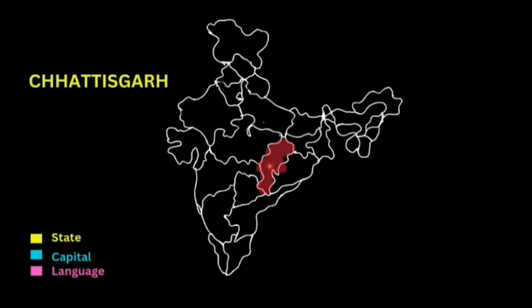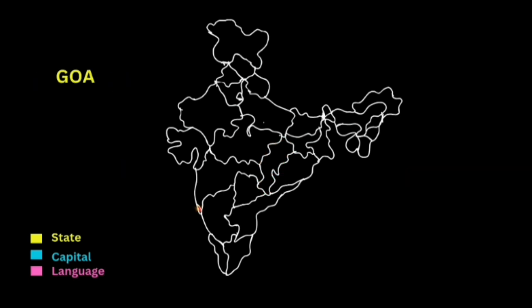State: Chhattisgarh. Capital: Raipur. Language: Hindi. State: Goa. Capital: Panaji. Language: Konkani.